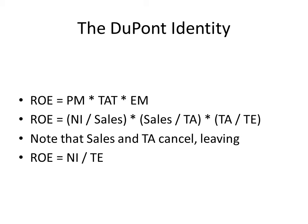Here we have the DuPont identity. It's simply: return on equity equals profit margin times total asset turnover times equity multiplier. We can break those down by writing in their formulae. Profit margin is net income over sales, total asset turnover is sales over total assets, and equity multiplier is total assets divided by total equity. Notice that sales cancel out, as do total assets, leaving us with net income over total equity — once again, our formula for ROE.